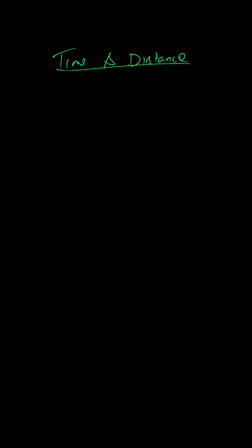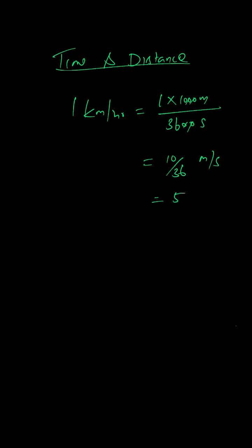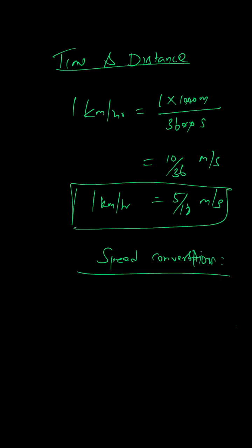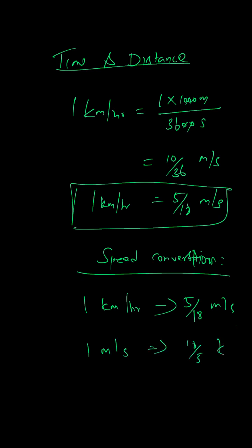For time and distance problems, we need to know the speed conversion formulas. One km per hour equals 5 by 18 meters per second. Conversely, 1 meter per second equals 18 by 5 km per hour. These conversions are essential for solving speed and distance problems.